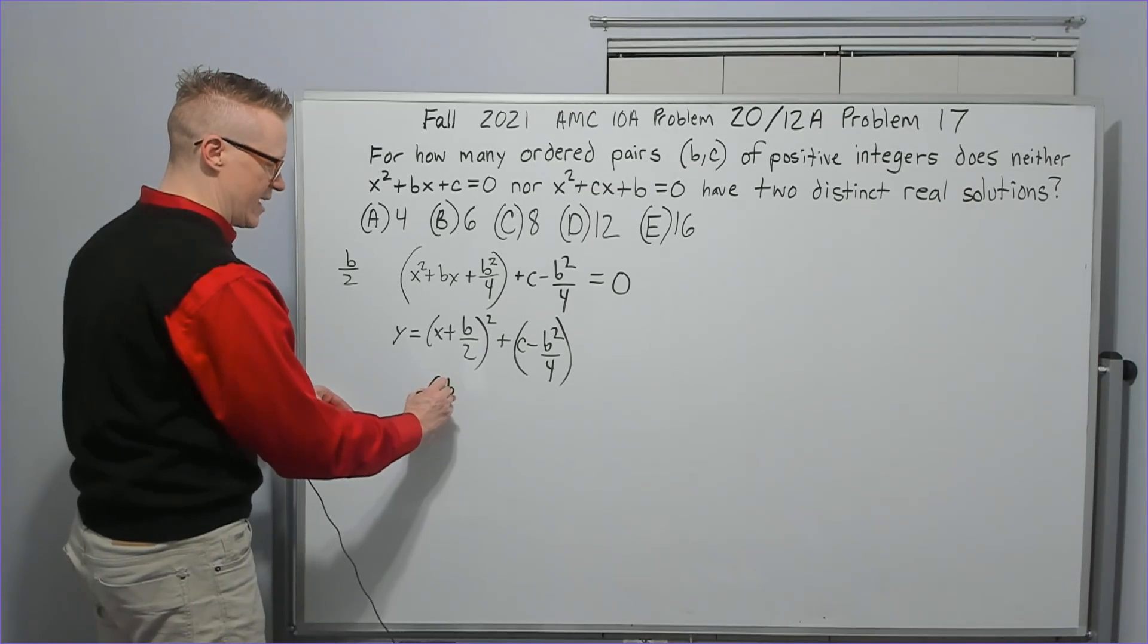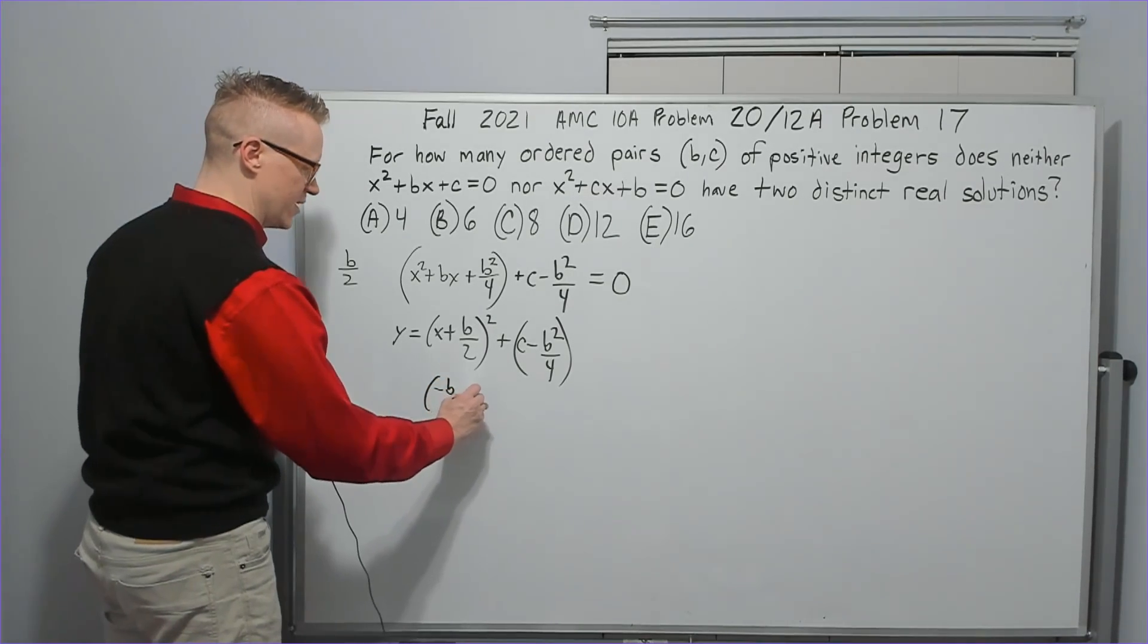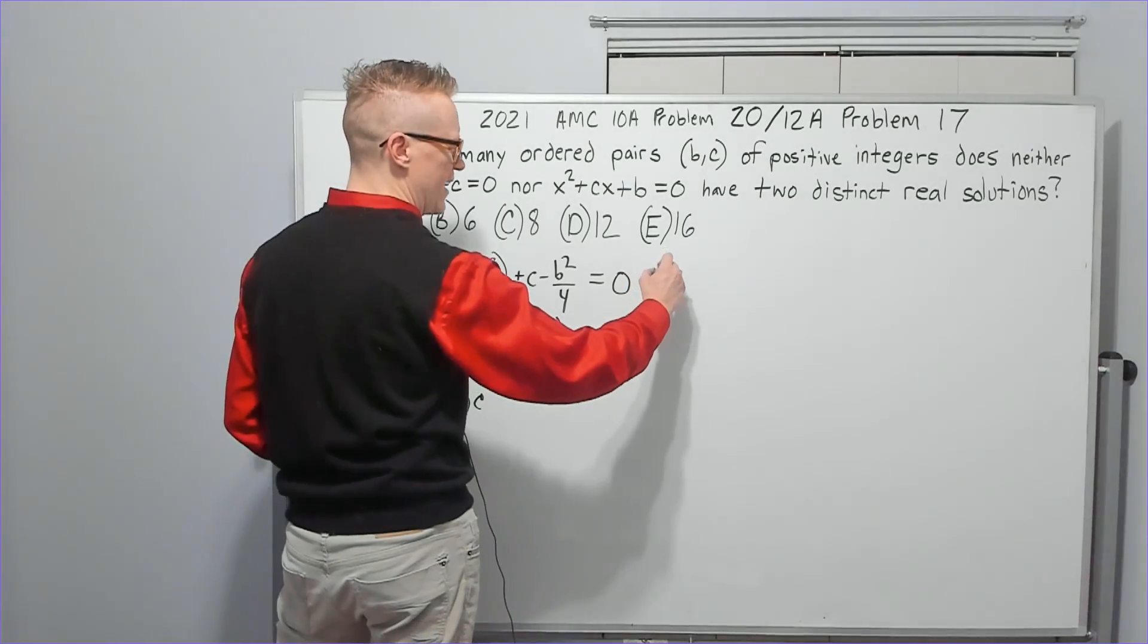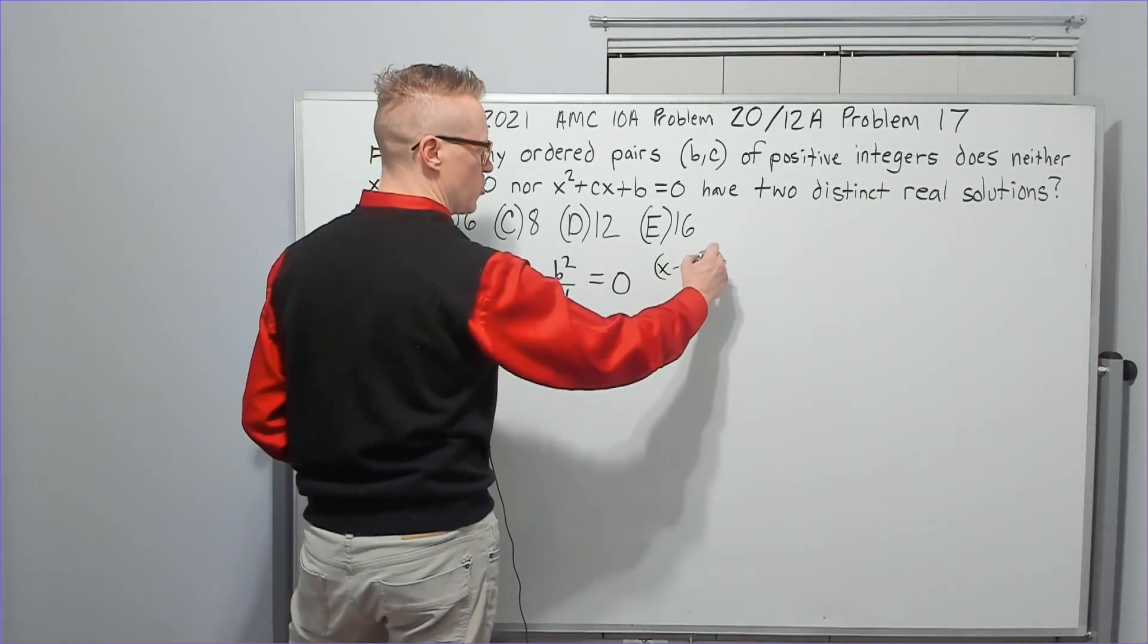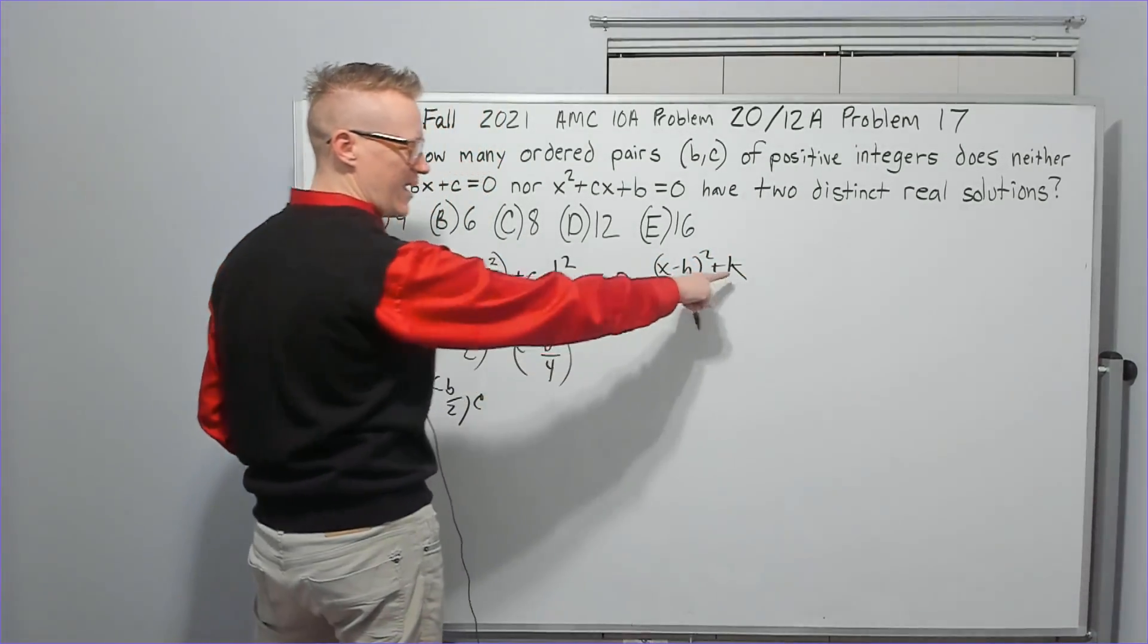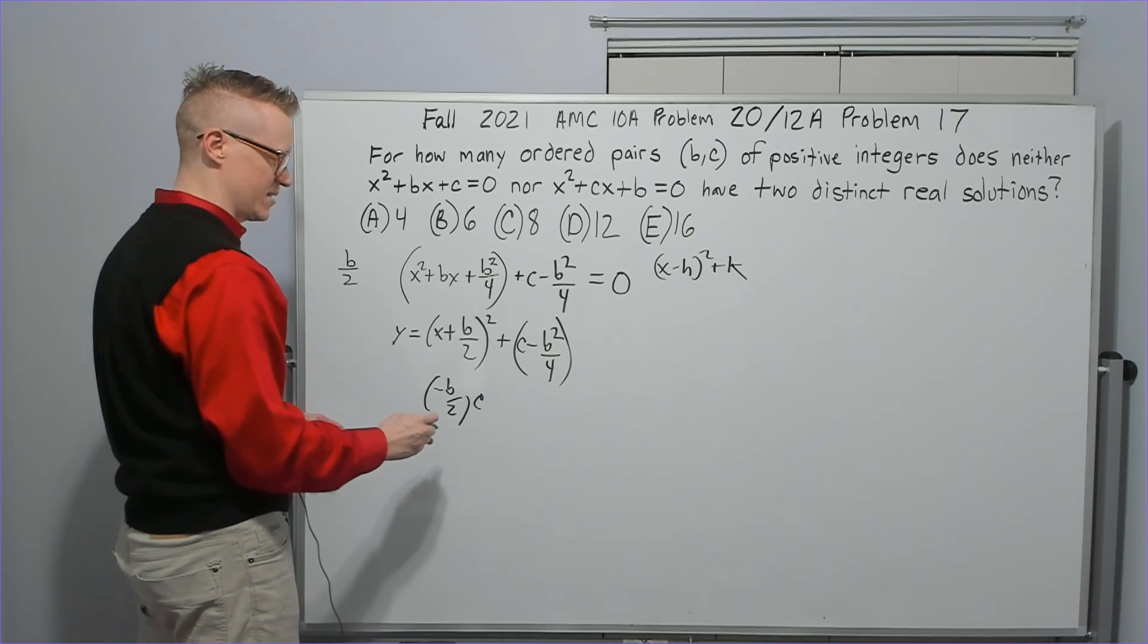And in vertex form, the vertex will be negative b over 2, comma, this value here. Again, you're looking at x minus h squared plus k. K being the y value of the vertex.